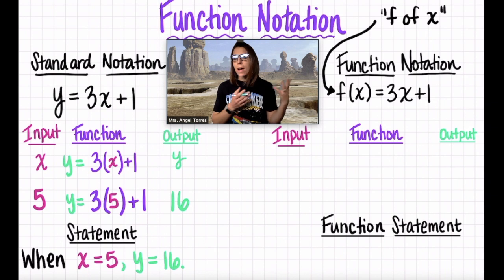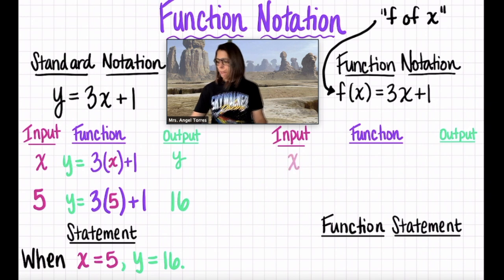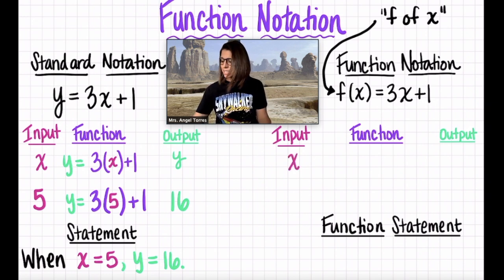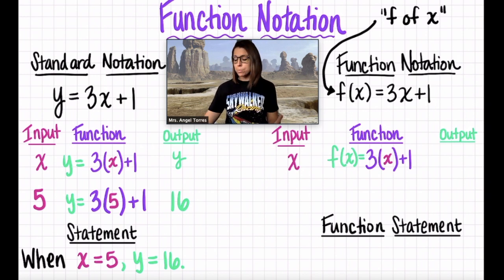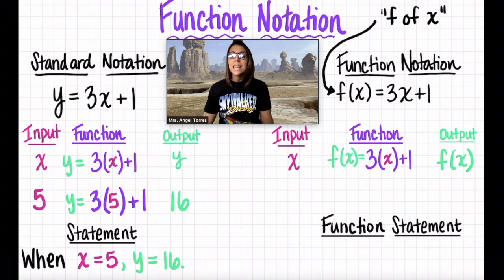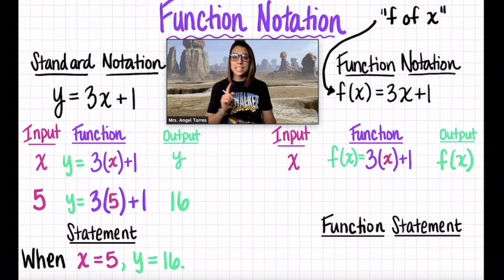Let's learn about how we can actually read this function notation: f of x equals 3x plus 1. Our inputs here are still x. The function here is still f of x equals 3x plus 1. But this time, instead of our outputs being y, our outputs are f of x.